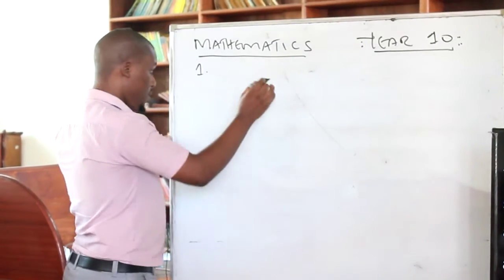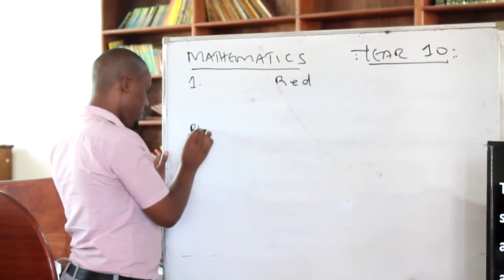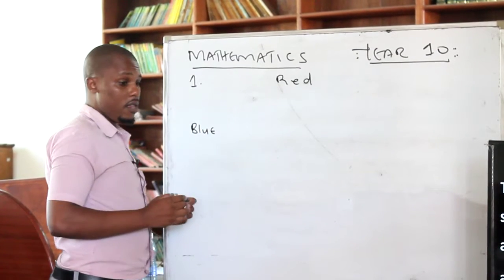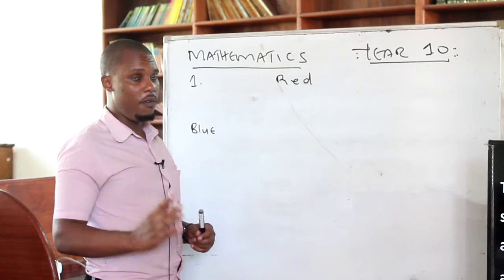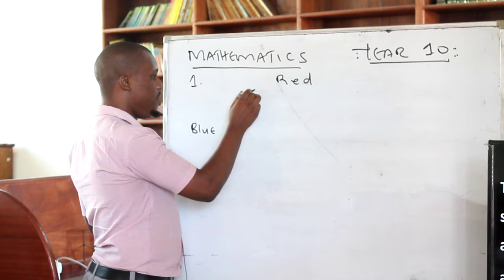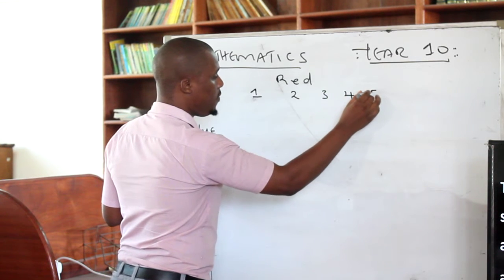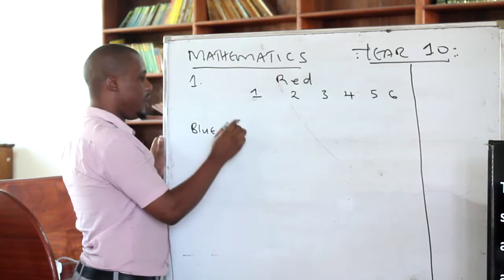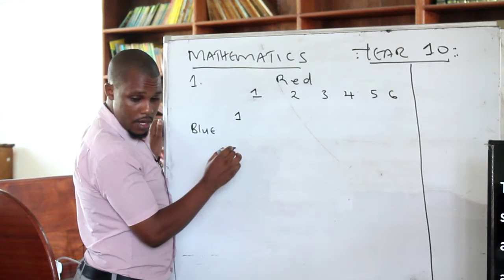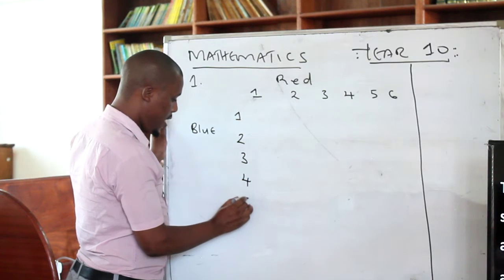Here we go. We are told that the first die is red, so the red die will be along the horizontal. Then the blue one will be vertical. Because each die has six faces, the least possible outcomes are six: you can get a 1, a 2, a 3, a 4, a 5, and then a 6. The same case applies to the other die — you have 1, 2, 3, 4, 5, 6. So from there we have the possible outcomes placed in the table.